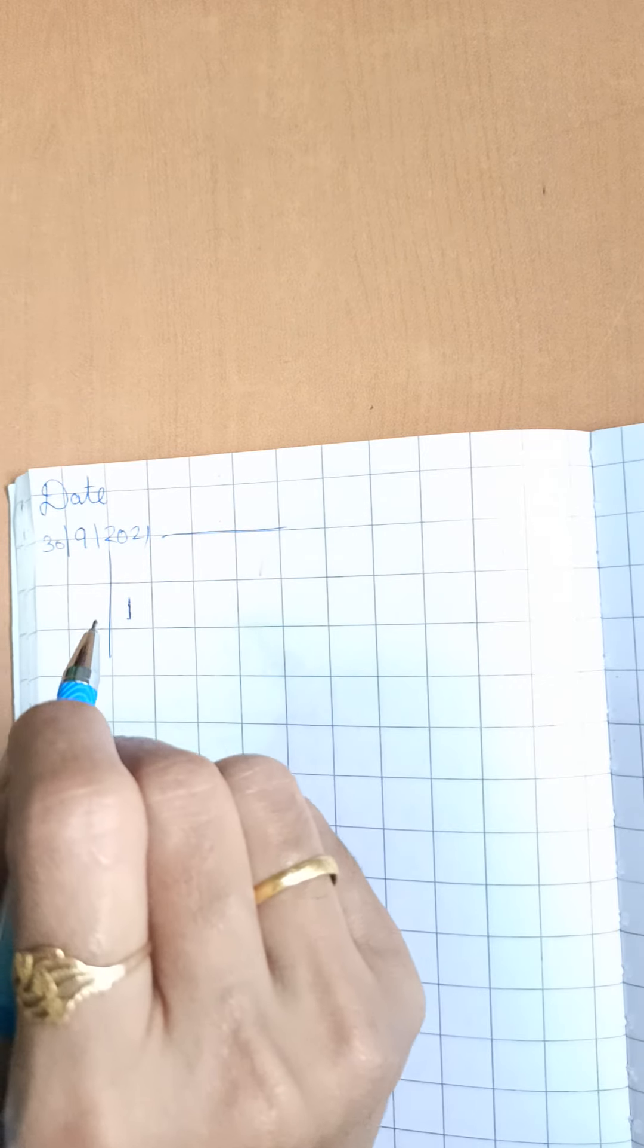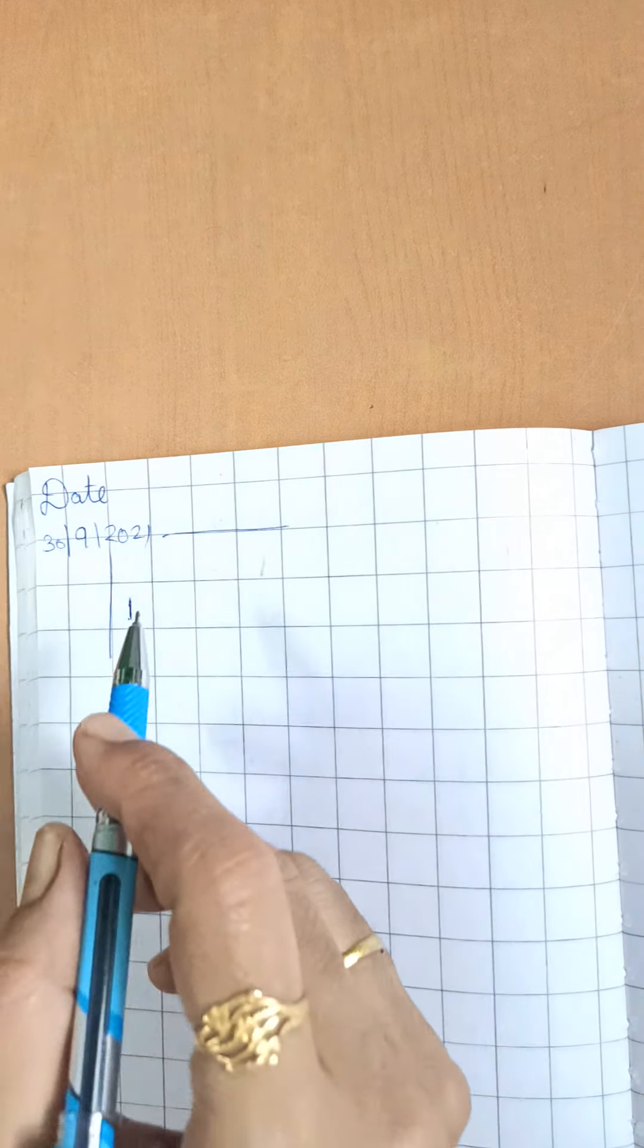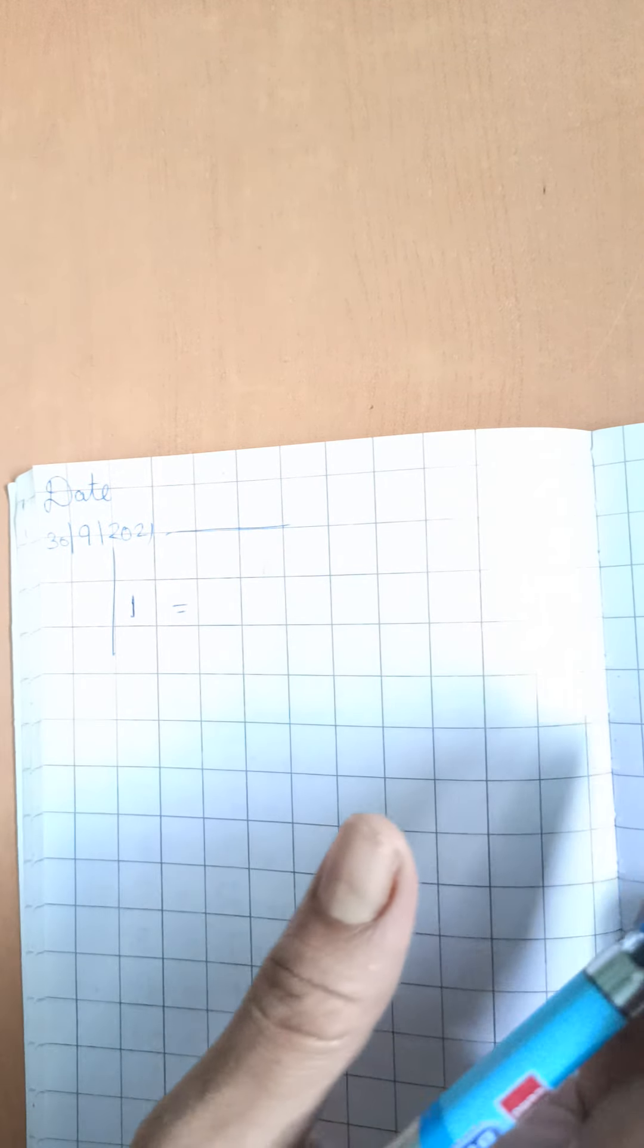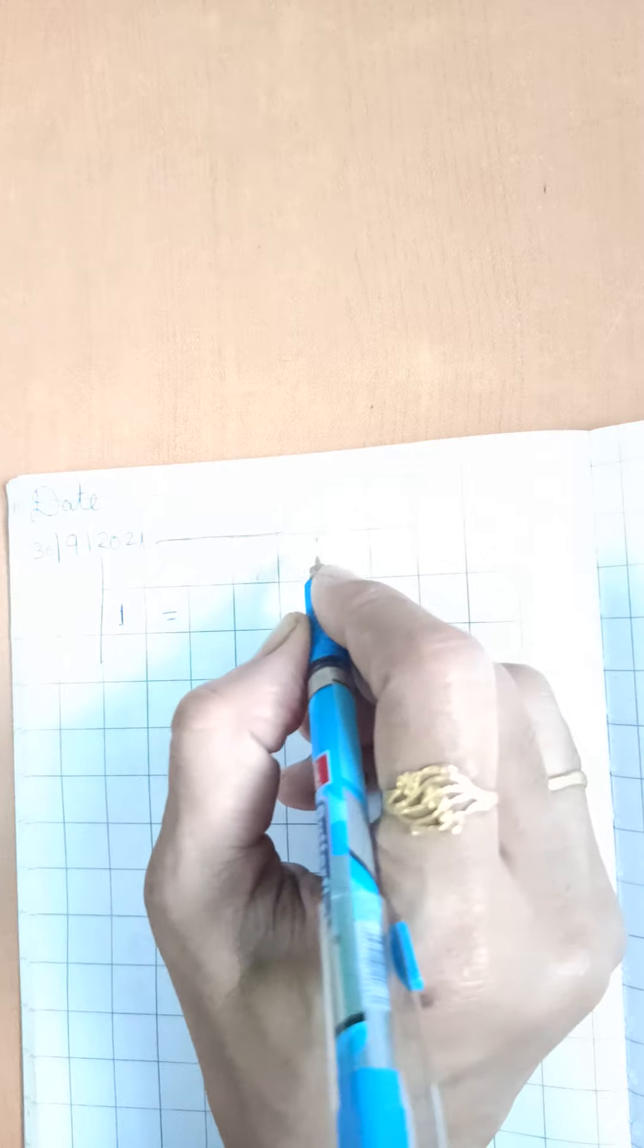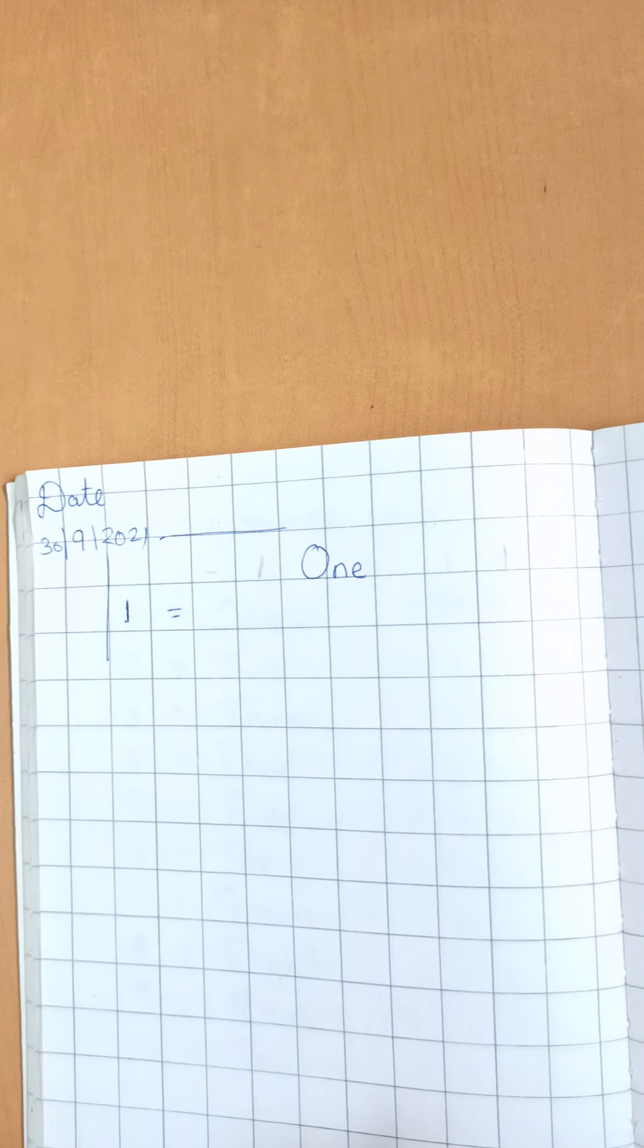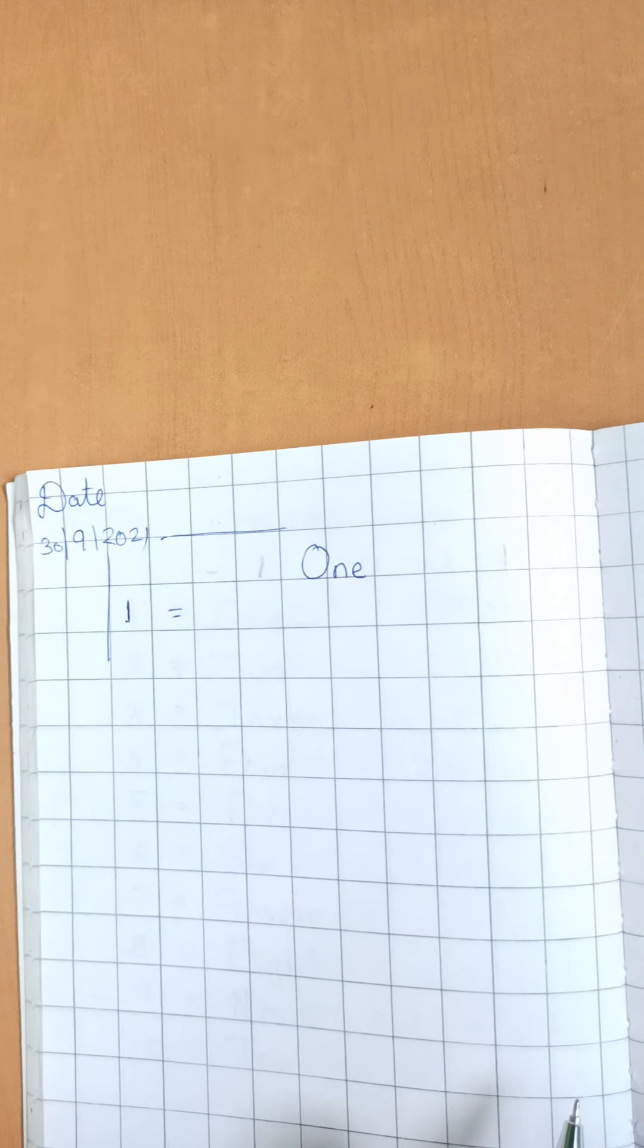Today we are going to learn number name 1. So, here 1 number is equal to, what is spelling of 1, O, N, E, 1. So, this is simple writing. Today we are going to write in cursive.